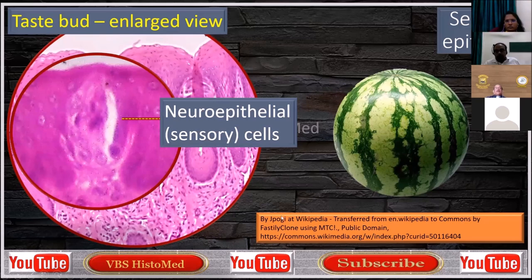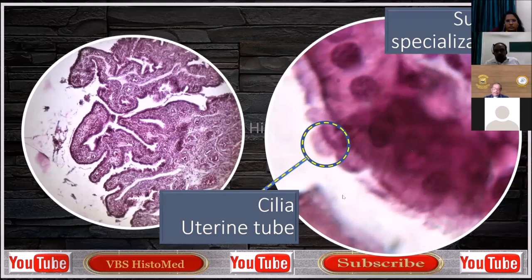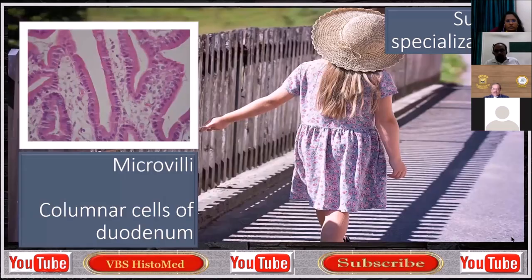No other fruit can give you a better example of neuroepithelial cells or the taste buds seen in the tongue. Here is a high contrast, very high magnification image — not possible in a conventional student microscope; I used a trinocular microscope, a higher-end piece of equipment. You can see the cilia of the uterine tube. Microvilli — that is the columnar cells of the duodenum. Although not so clearly visible, by inference you can use the comparative example to understand the concept of microvilli.